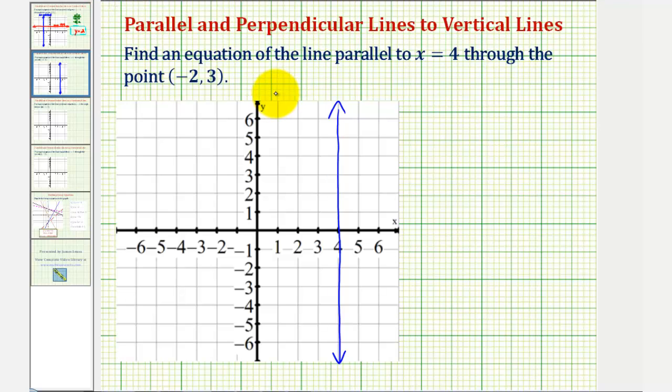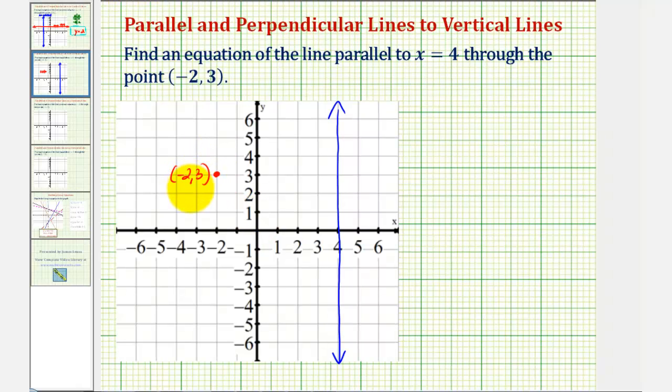And we're trying to find the equation of a line that's parallel to this line, passing through the point (-2, 3), which would be here. Well, if two lines are parallel, they never intersect and have the same slope. Which means the line that's parallel to the blue line would be this red vertical line, passing through the given point.